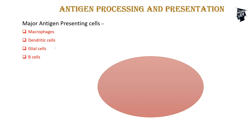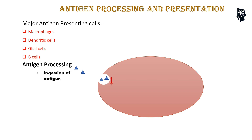The antigen presenting cells are the macrophages, dendritic cells, glial cells, and B cells. In antigen processing, the first step is ingestion — the antigen gets ingested into the antigen presenting cells. The next step is digestion — lysosomal enzymes help digest the antigen.